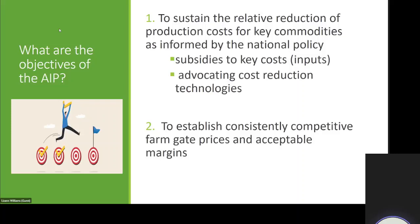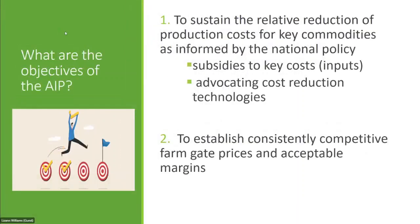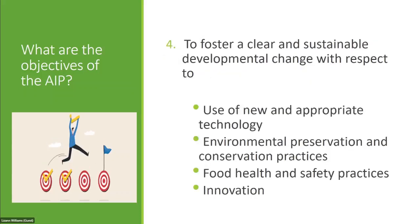What are the objectives of the AIP? The objectives are: to sustain the relative reduction of production costs of key commodities as informed by national policies; to subsidize key inputs, advocating cost-reduction technologies; to establish consistently competitive farm gate prices and acceptable margins; to stimulate increased production levels both in quantity and range of produce; to allow for affordable consumer prices; and to foster clear and sustainable developmental change with respect to the use of new and appropriate technology, environmental preservation, food health and safety practices, and innovation.